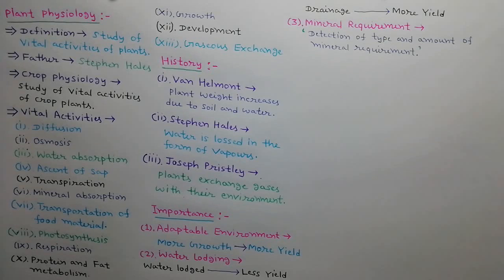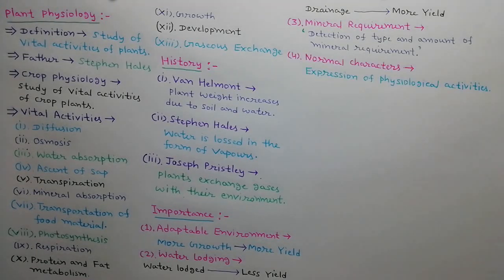We can understand which plant requires which type and how much minerals for their normal growth. Normal characters of plants are the expression of their physiological activities such as disease resistance, tolerance, primary production capacity, formation of fruit and seed, development of desired floral characters, and early maturation.